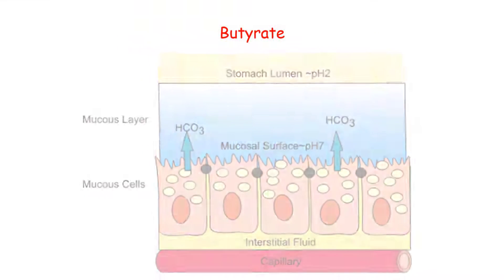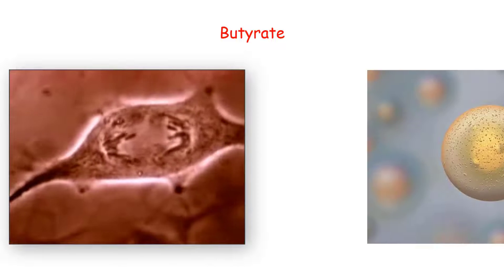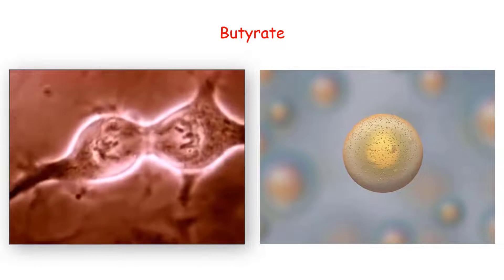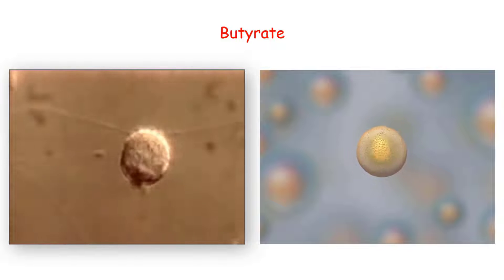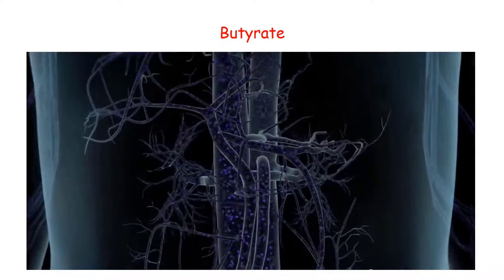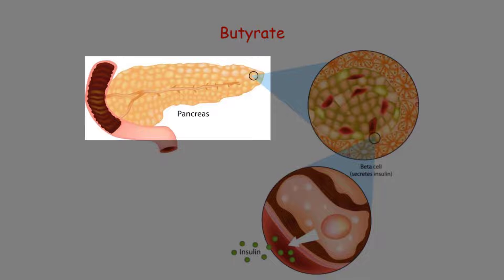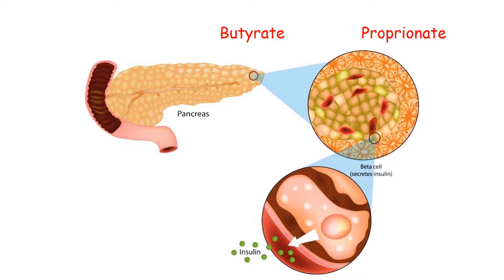In the event that new epithelial cells are required, butyrate steps in. It not only promotes the growth of fresh, healthy cells, but also plays a role in apoptosis — a natural process of programmed cell death — targeting epithelial cells that may be at risk of becoming cancerous. Additionally, the control of blood glucose heavily depends on the release of insulin from the beta cells in the pancreas. Propionate signals for both the growth and protection of pancreatic beta cells and also triggers insulin secretion associated with glucose increase.